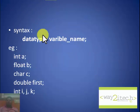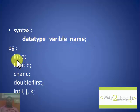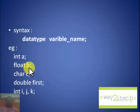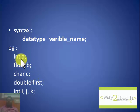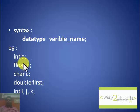The syntax for declaration is: data type, space, variable name. For example: int A — int is the data type, A is the variable name. Float B — float is the data type, B is the variable name. Char C — char is the data type, C is the variable name. A is a variable of int type and takes 2 bytes of memory. B is a variable of float type and takes 4 bytes. C is a variable of char type and takes 1 byte.